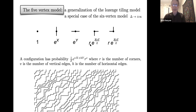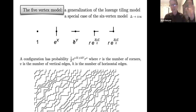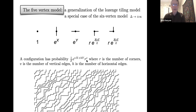You get a weight r per corner—every time you turn right or left you get a factor of r at a vertex. The capital X and Y give e^x per vertical edge and e^y per horizontal edge, so x and y control the density of horizontal and vertical edges, and r controls the number of corners. A configuration has probability proportional to e^(vx + hy) × r^c, where v is the number of vertical edges, h is horizontal edges, c is corners, and Z is the partition function—the fundamental quantity to compute.